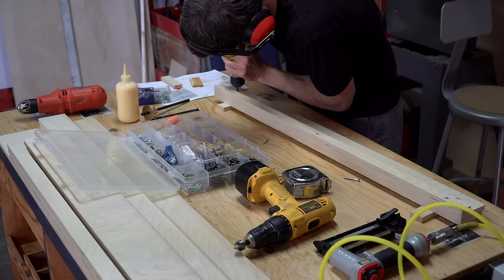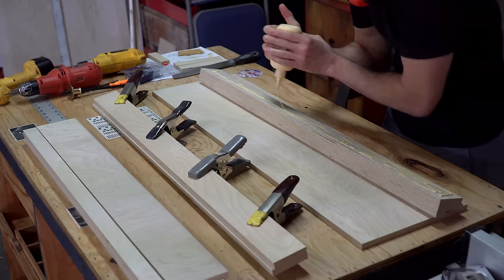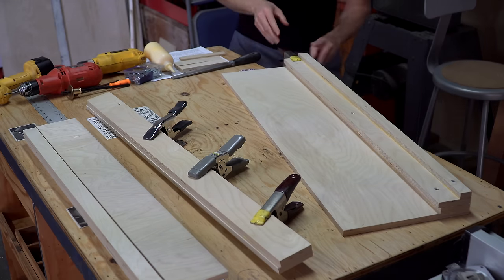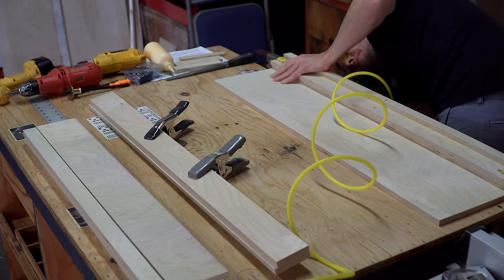For every single screw I use on this project, I'm drilling a pilot hole and using a countersink bit. Here, I'm attaching the first sub-assembly to the board that makes up the main base of the lathe.